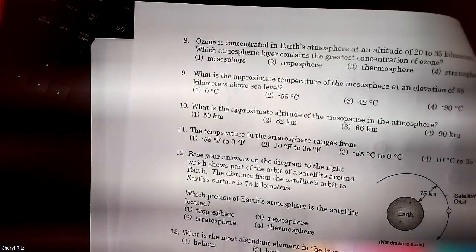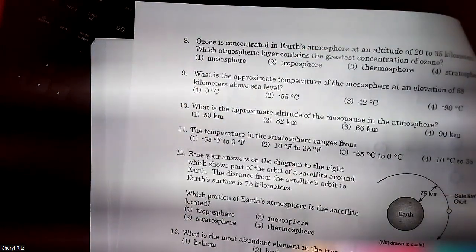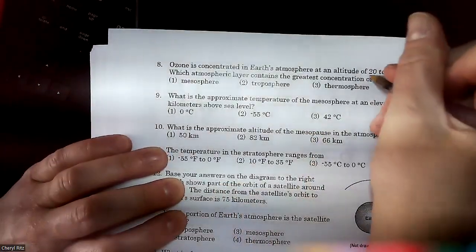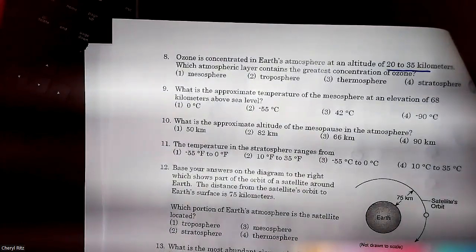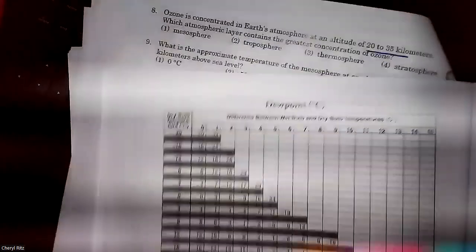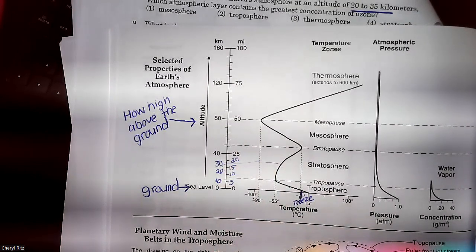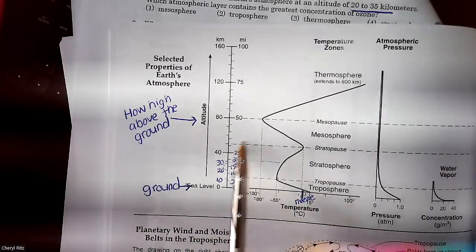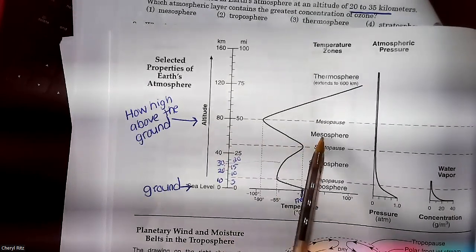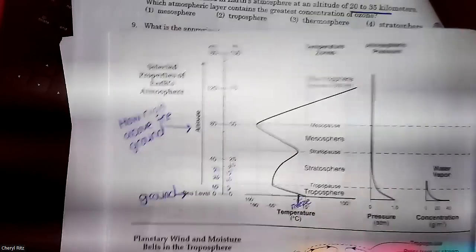Here's another ozone question. I'm not required to teach you ozone, but they do often ask about it — they tell you a little bit and expect you to use your skills. It says ozone is concentrated 20 to 35 kilometers — this time they specifically only gave you kilometers. 20 to 35 kilometers puts you in the stratosphere. If you had used miles you would have thought it was the stratosphere and mesosphere, so read the words carefully.